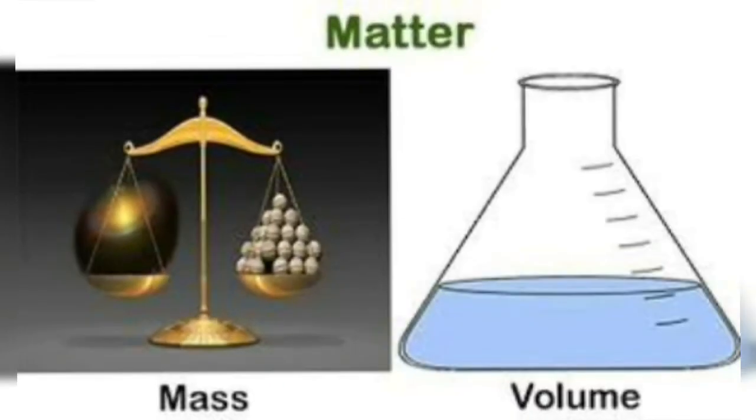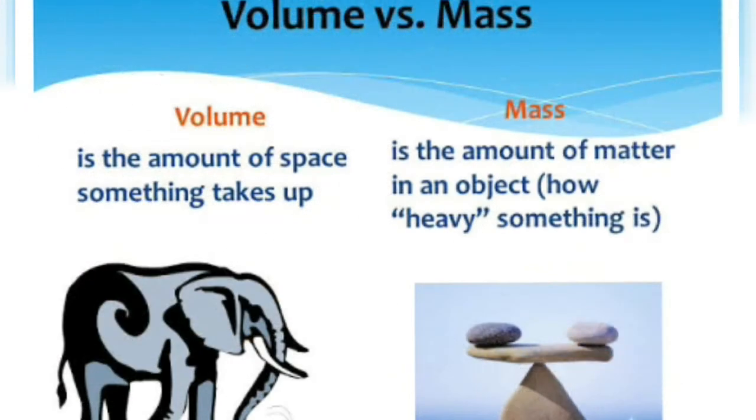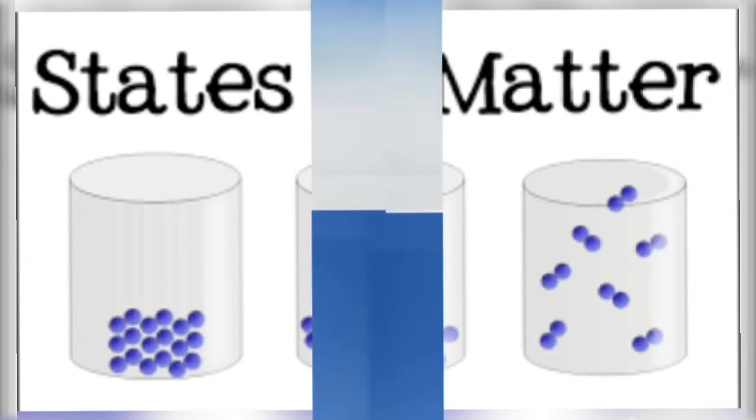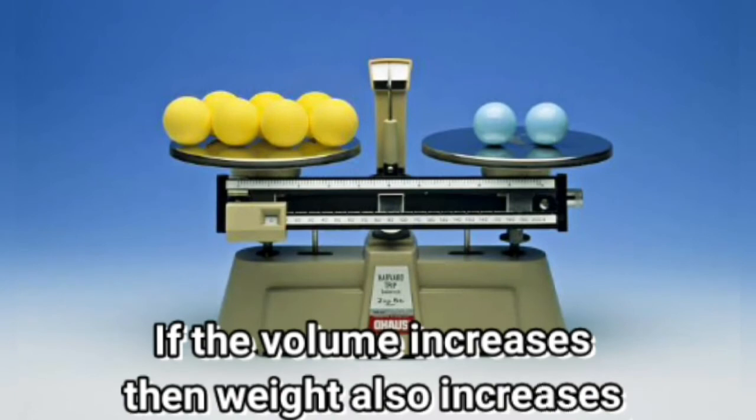So, what is the relationship between the volume and weight of a substance? Greater the matter of an object, greater is its mass. Whereas, the volume of an object is the measurement of the space it occupies. So, greater the matter, greater is its volume. When the volume of a substance increases, its weight also increases along with it.